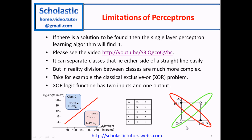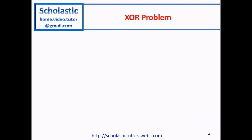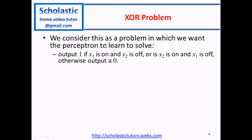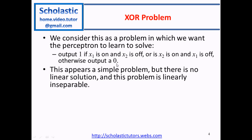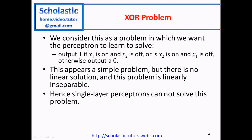Therefore we are going to use a multilayer perceptron model. We consider this as a problem in which we want the perceptron to learn to output 1 if X1 is on and X2 is off, or if X2 is on and X1 is off, otherwise output 0. This appears a simple problem but there is no linear solution — this problem is linearly inseparable. Hence, single-layer perceptrons cannot solve this problem.